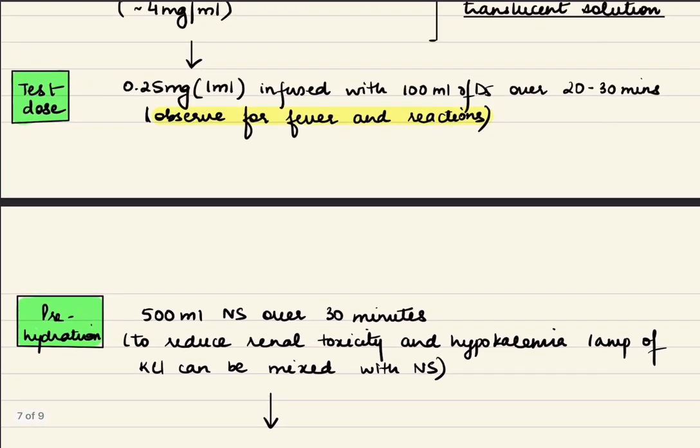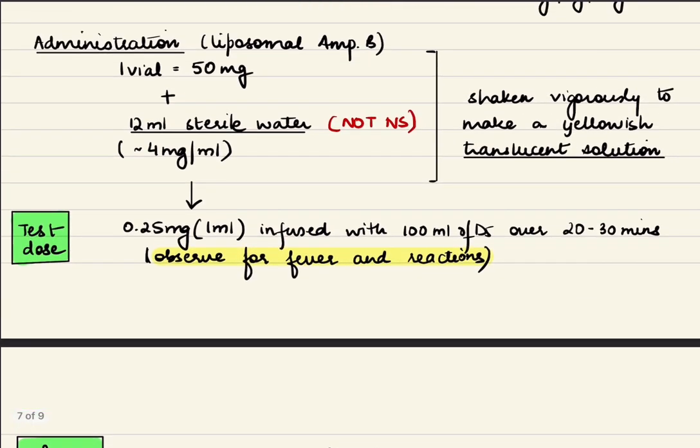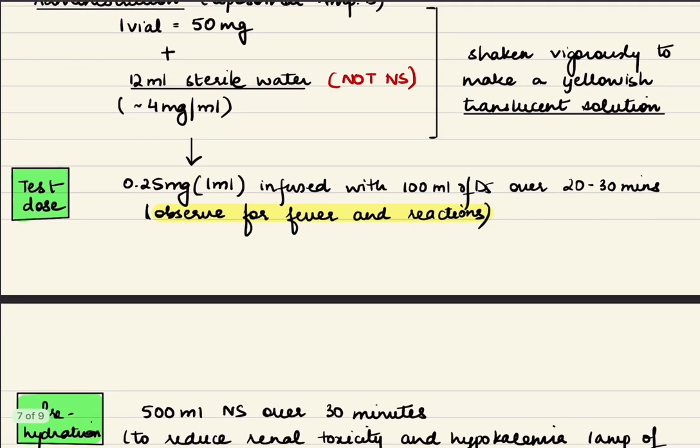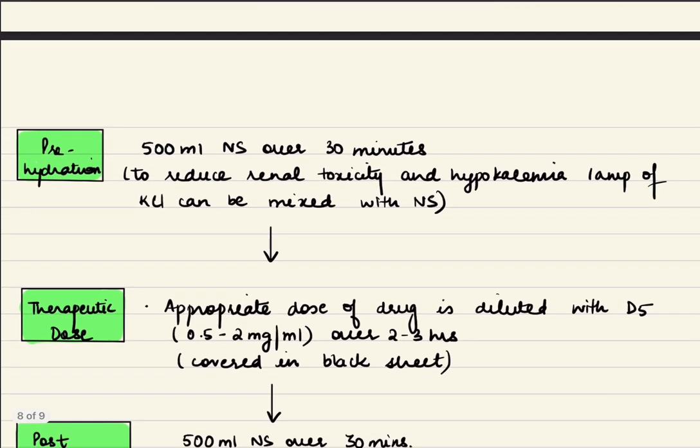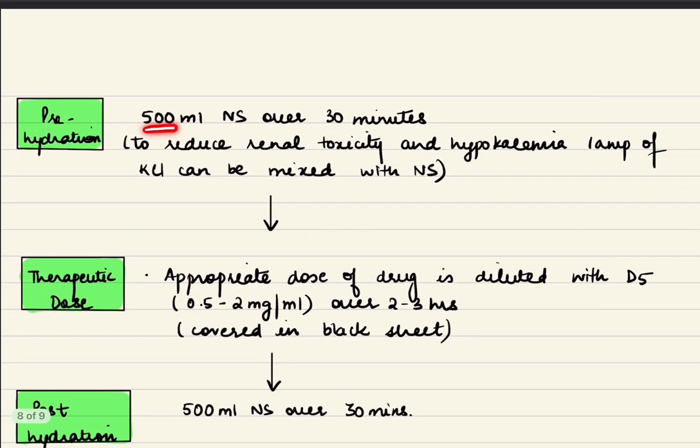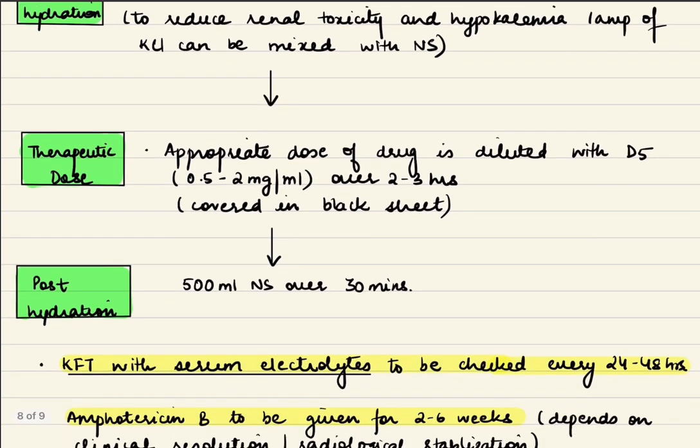Quick revision: one vial is 50 mg, reconstitute with 12 ml of sterile water. 1 ml is transfused with 100 ml of D5 over 20 to 30 minutes as the test dose. Then pre-hydrate the patient with 500 ml of NS, then give the therapeutic dose.